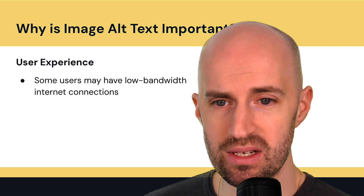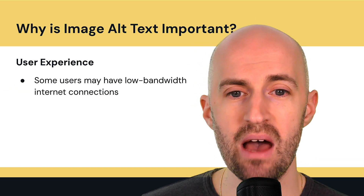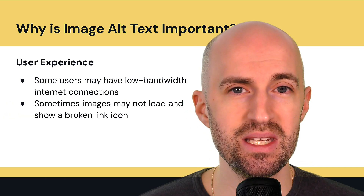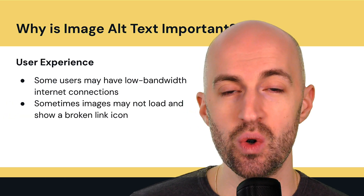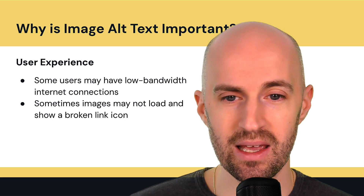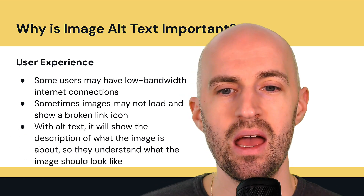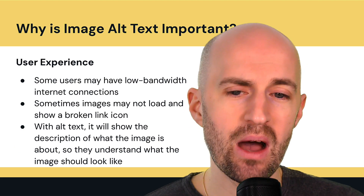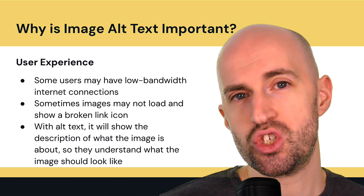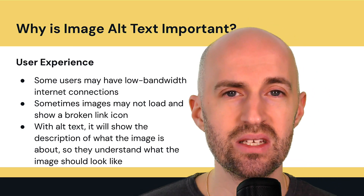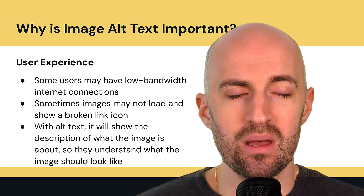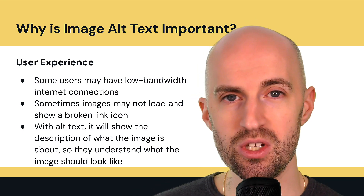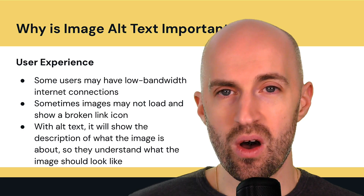Next is user experience. Some users may have low-bandwidth internet connections, and sometimes images on web pages may not load, showing a broken image link icon instead. But with alt text, it will show the description of what that image is about, so they understand what the image should look like. The person can understand what the image is there for and the context of it.